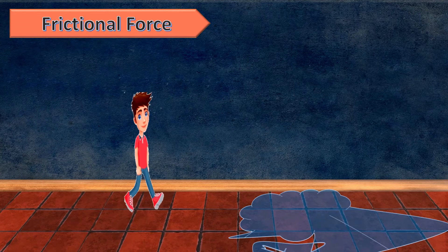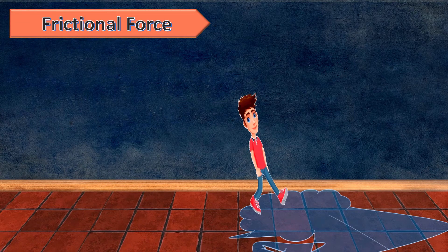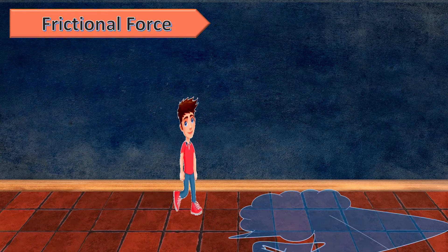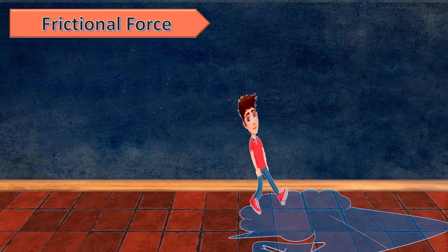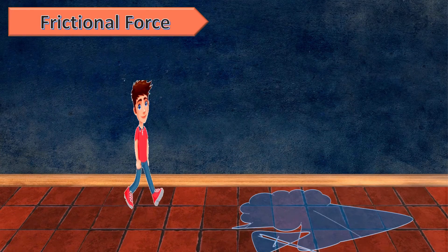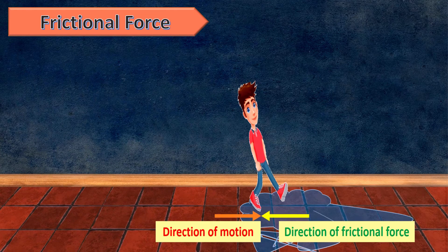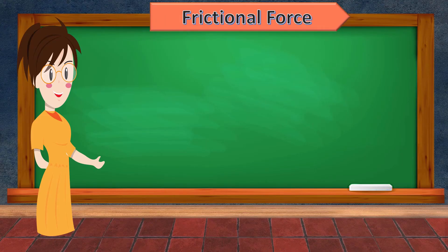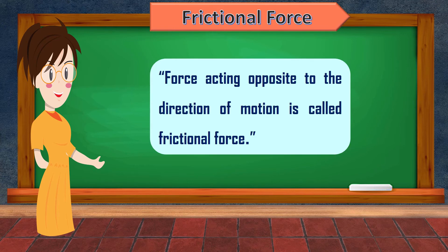Ram is going to the playground, and while going he slipped on the wet floor. Do you know why he slipped? When Ram is walking on the wet floor, frictional force comes into play between the floor and his legs. But this force acts in the opposite direction of his motion, due to which the force of friction between his legs and the wet floor reduces. As a result, he slipped. So, frictional force can be defined as: the force acting opposite to the direction of motion is called frictional force.